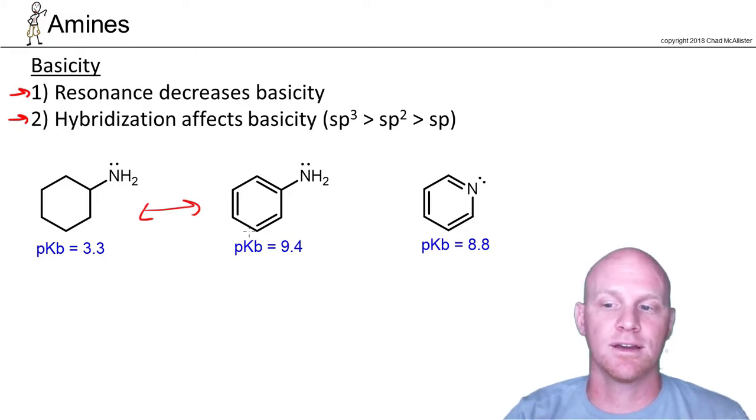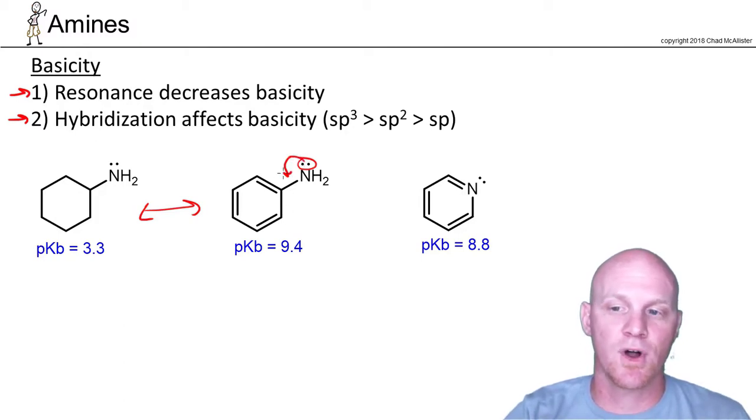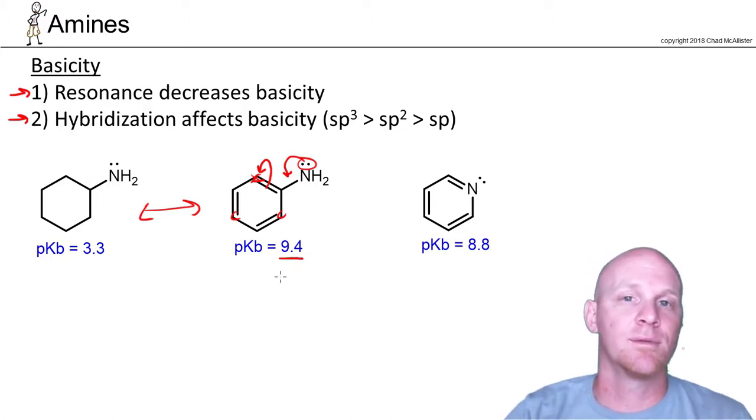But with aniline here, the lone pair of electrons on the nitrogen being one bond away from pi electrons, there are three additional resonance structures we could draw that show the lone pair being shared by three different carbons on the ring. As a result, resonance stabilized that base, making it a much weaker base, as evidenced by the much higher pKb.